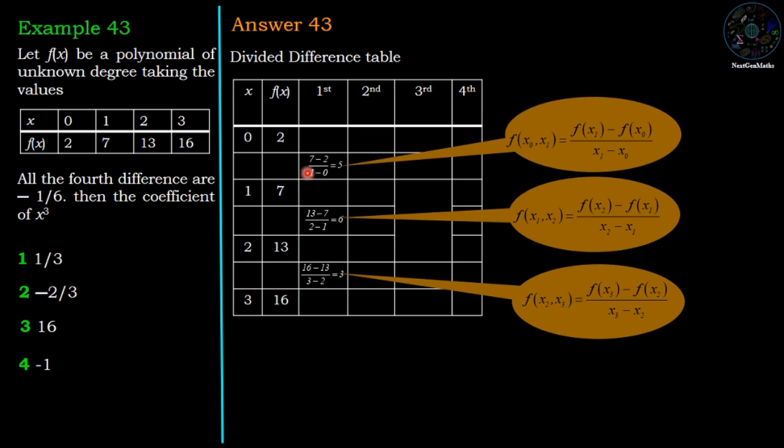Here, 7 minus 2 divided by 1 minus 0 has value 5. Second first order difference: 13 minus 7 divided by 2 minus 1 equals 6. And the third difference: 16 minus 13 divided by 3 minus 2 equals 3. So 5, 6, and 3 are the first order differences.